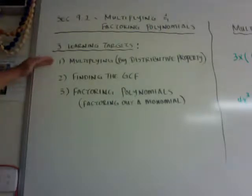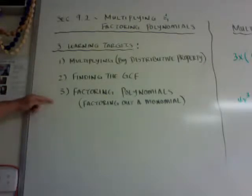Multiplying by the distributive property, finding the greatest common factor or GCF, and then factoring polynomials where you factor out a monomial from the polynomial.